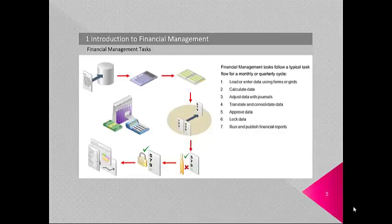Financial Management tasks follow a typical task flow for a monthly or quarterly lifecycle. First, load or enter data using forms or grids. Second, calculate data. Third, adjust data with journals. Fourth, translate and consolidate data. Once translated and consolidated, the approver will review and approve the data, and then the administrator will log the data and run and publish the financial reports.